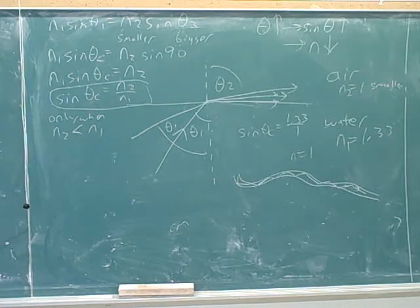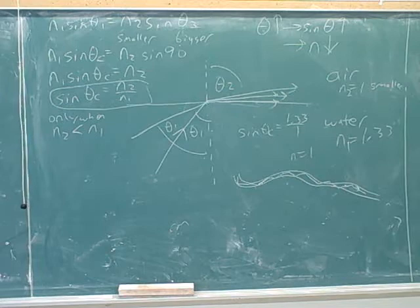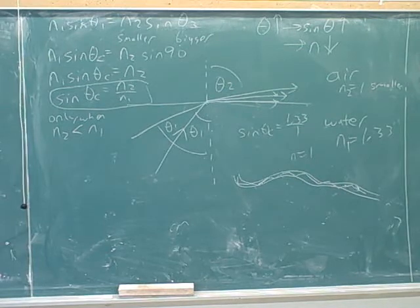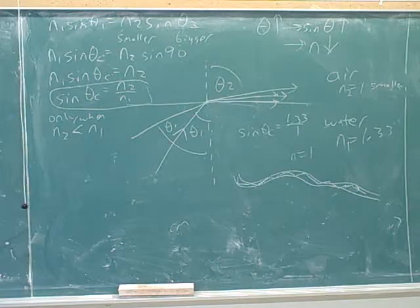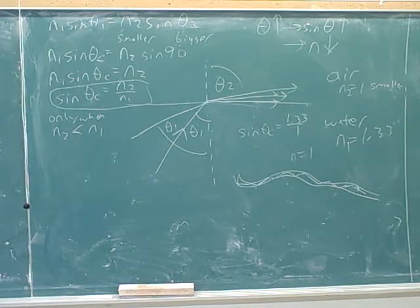If you have a polarized ray and it comes in at some angle, then the angle between the reflected and refracted rays is 90 degrees, and then the polarization doesn't change.